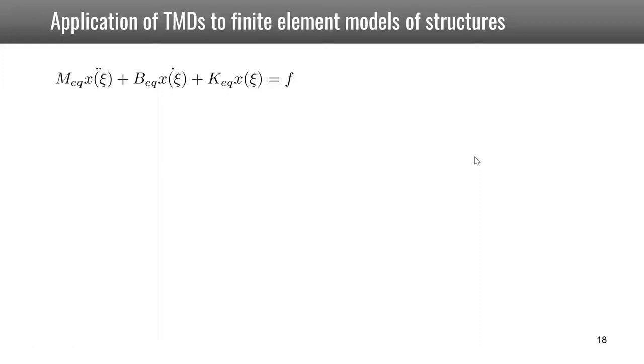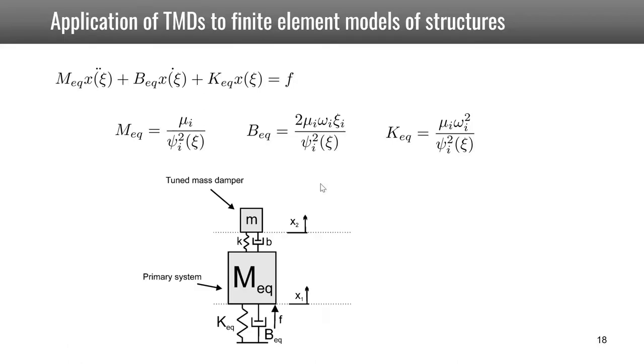The equivalent mass, damper, and stiffness are given by the following equations, where mu i is the modal mass of the mode considered, Omega i is the natural frequency of the mode, and xi i is the modal damping. Phi i is the mode shape at position x i, so at the position where the TMD is added. The equivalent mass, stiffness, and damper will depend on the position of the TMD.